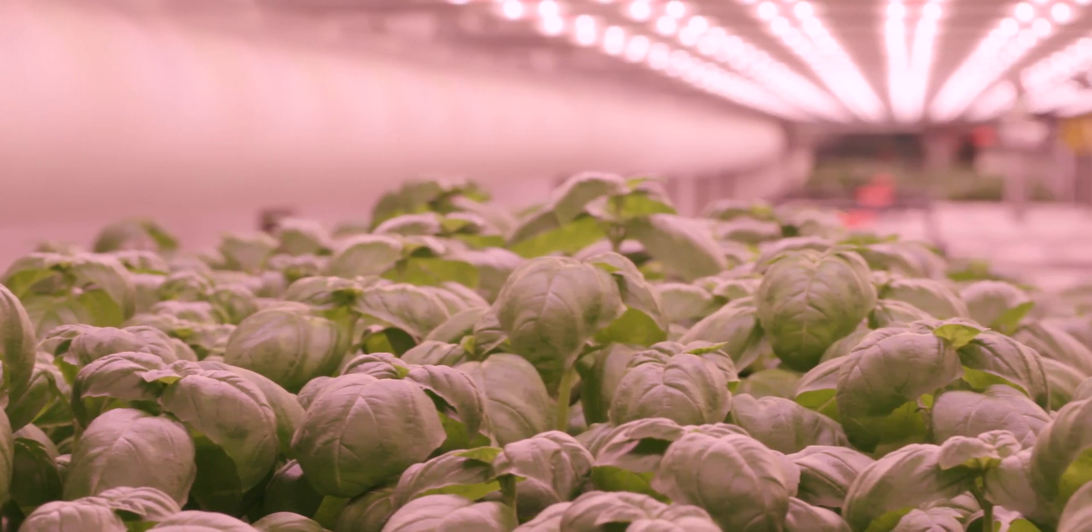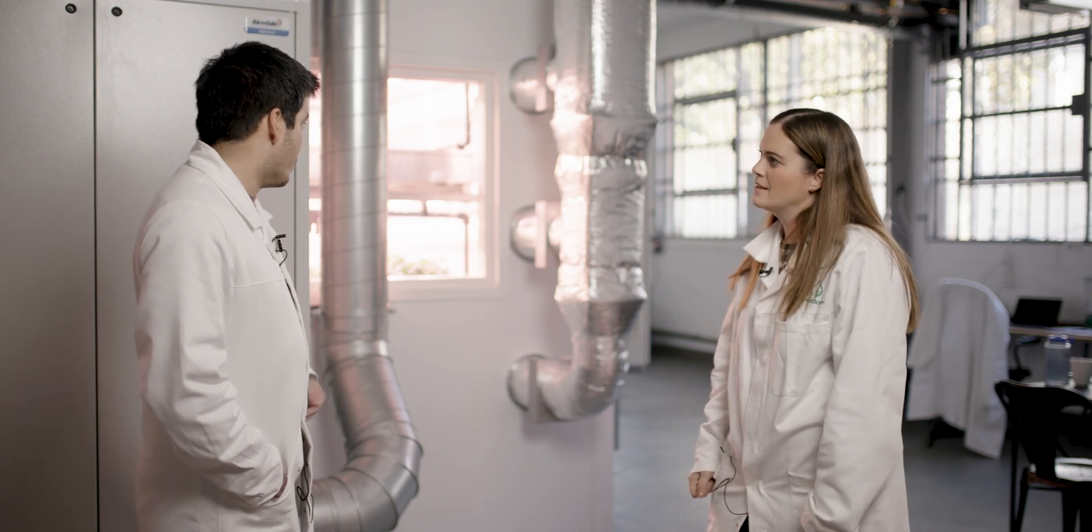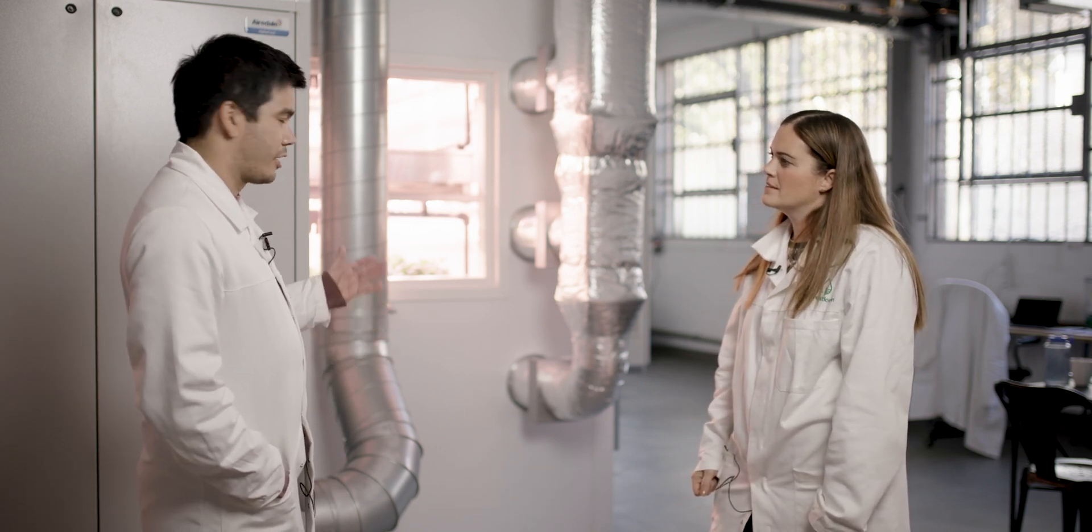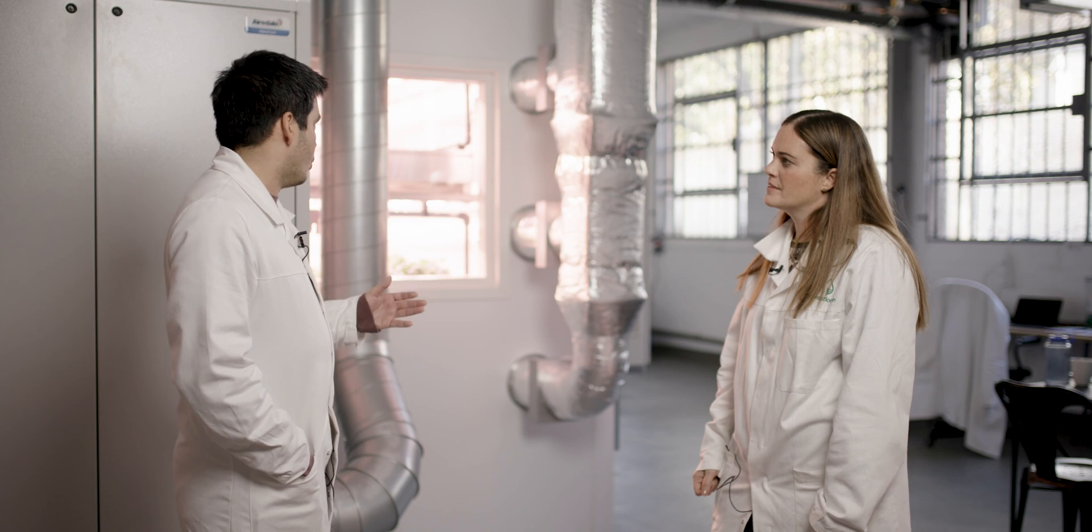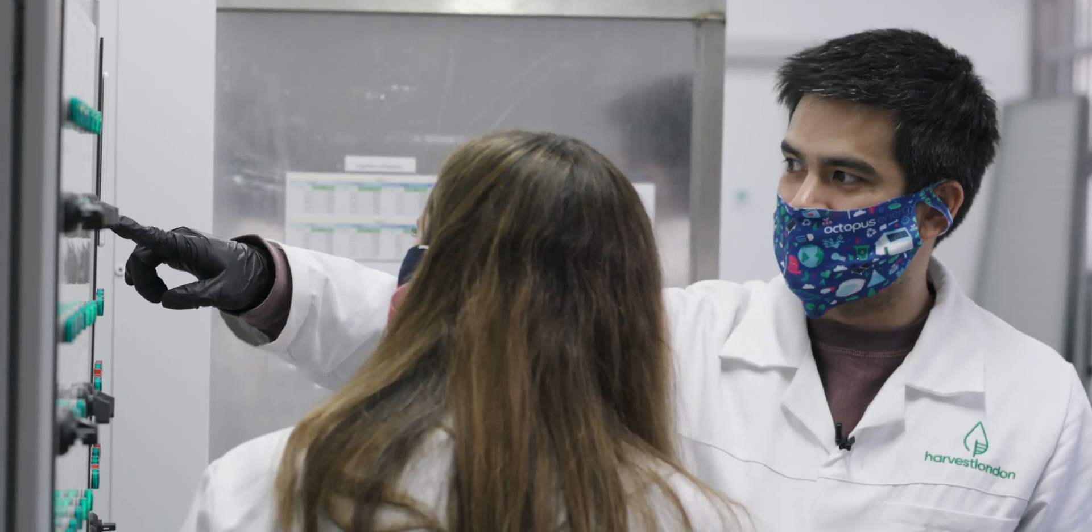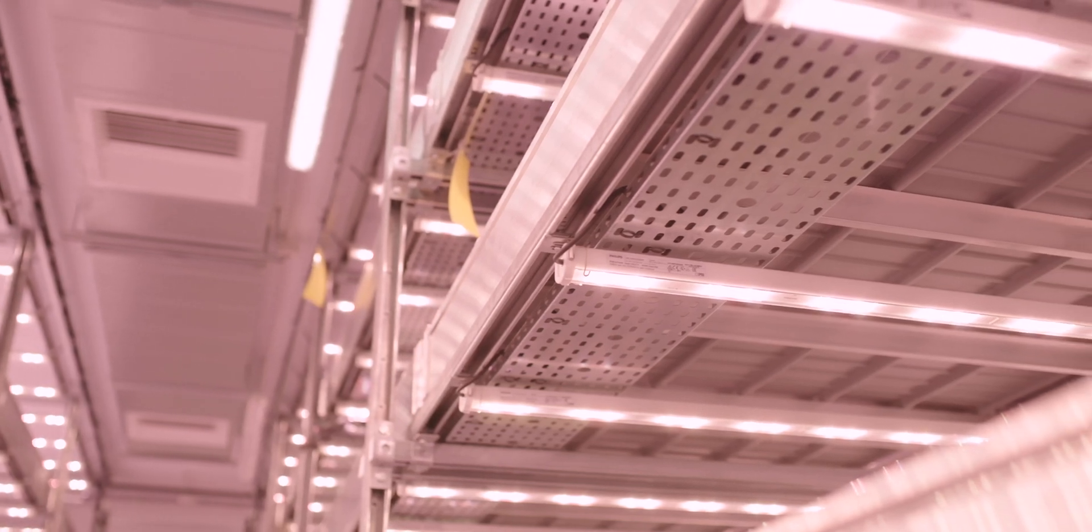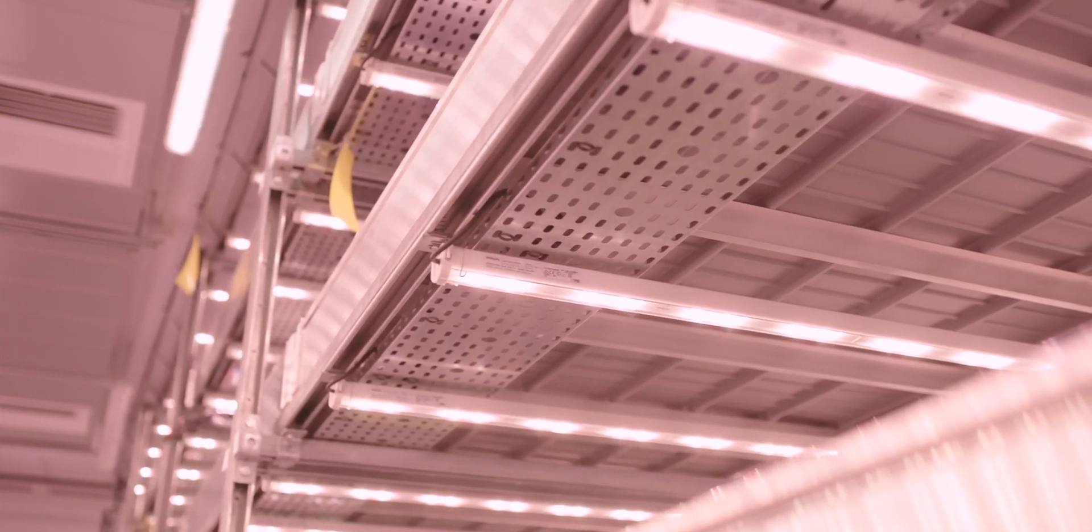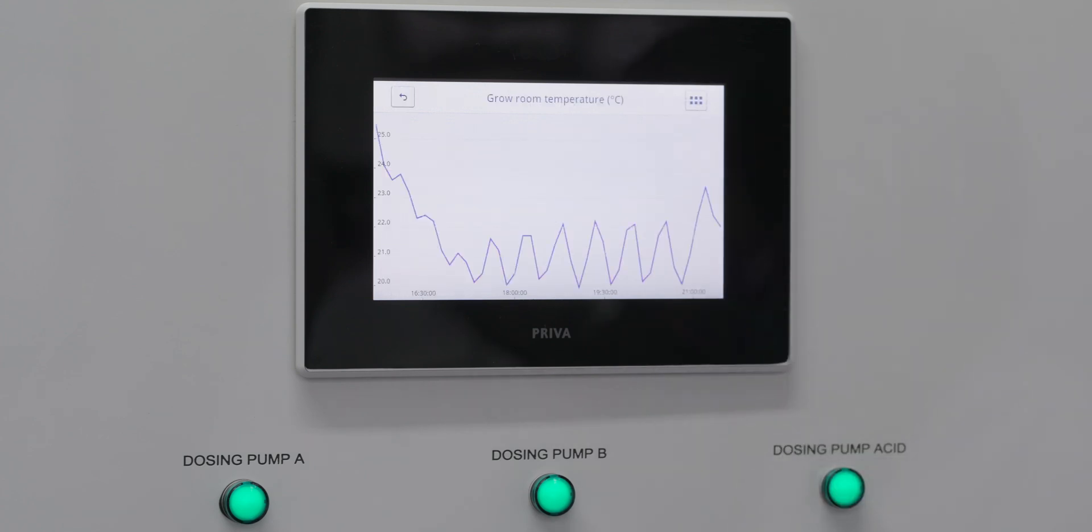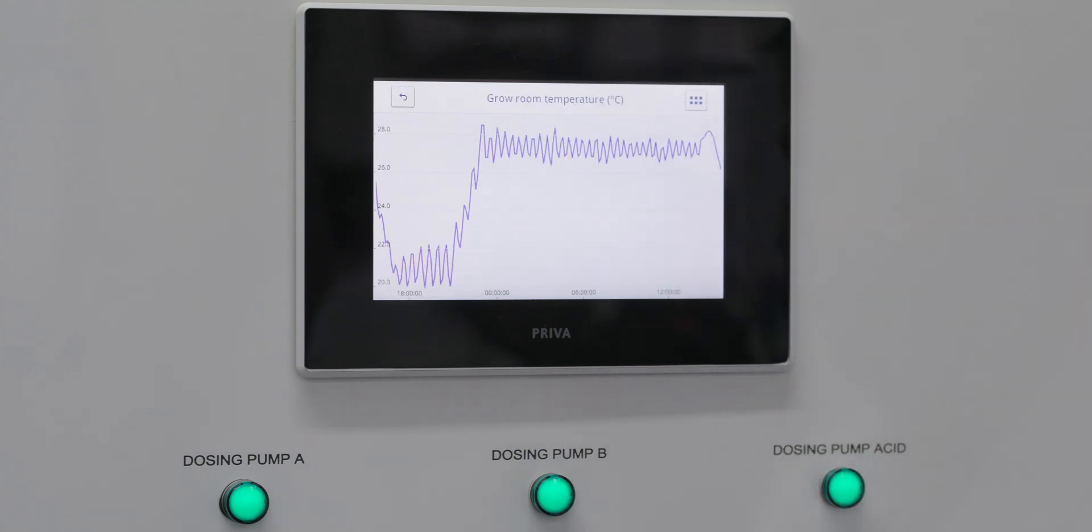We grow in a controlled environment where we actually control every variable of growth. Inside this box we can control lights, humidity, temperature, essentially creating the perfect growing conditions for crops so that it tastes the best, lasts the longest on the shelf, and doesn't have to travel from very far away.